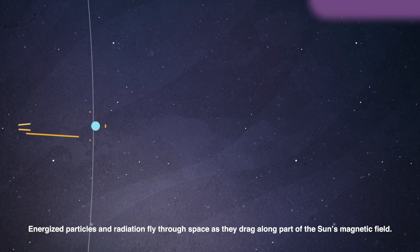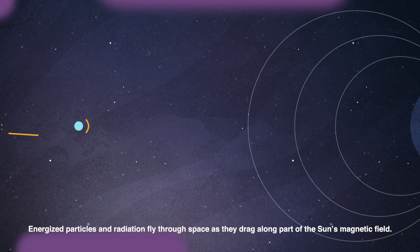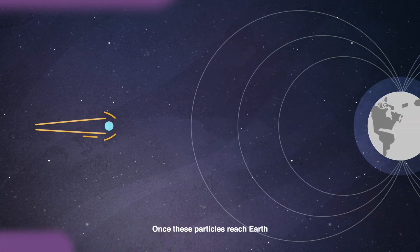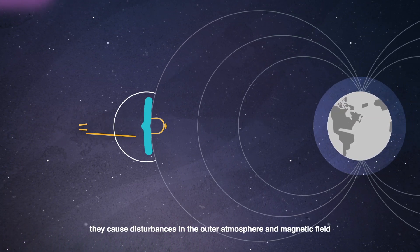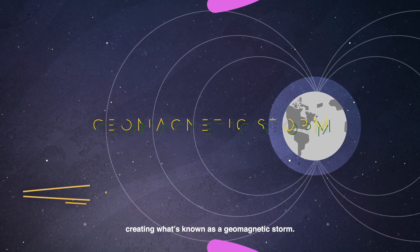Energized particles and radiation fly through space as they drag along part of the Sun's magnetic field. Once these particles reach Earth, they cause disturbances in the outer atmosphere and magnetic field, creating what's known as a geomagnetic storm.